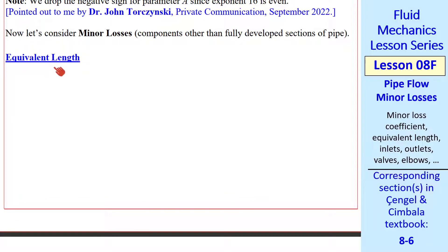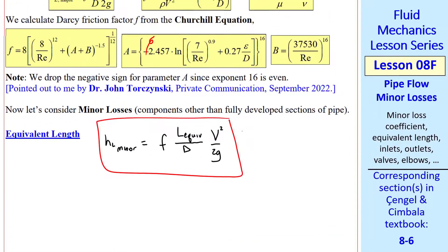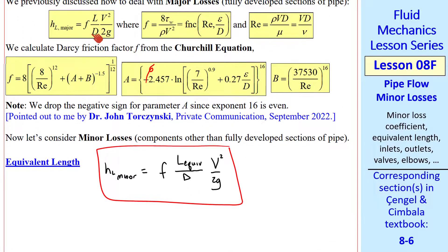The first one is equivalent length. We express the minor loss as f times L equivalent over d times v squared over 2g. Notice that this is the same form as the major losses, except we're using some equivalent length.